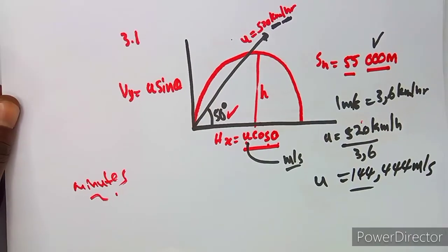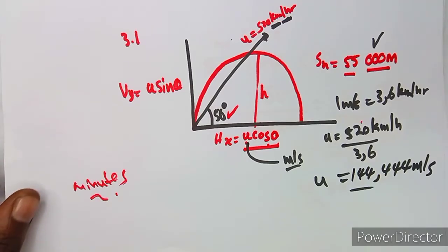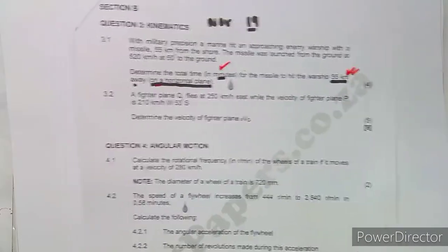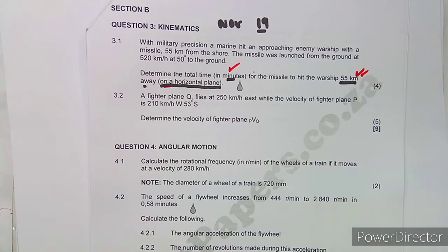That was the consideration for question 3.1. It is important to understand the concept you are working with. Now let's look at another question: fighter plane Q flies at 250 kilometers per hour east, while fighter plane P has a velocity of 210 kilometers per hour west 53 degrees south. Determine the velocity of fighter plane P with respect to Q.